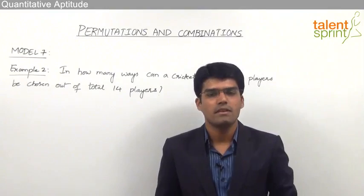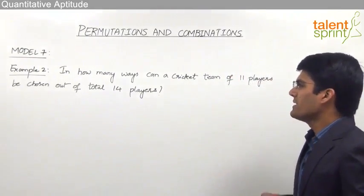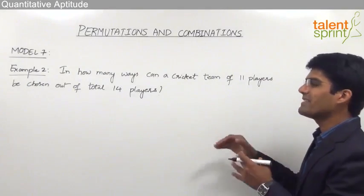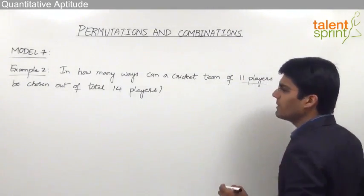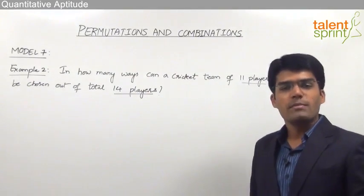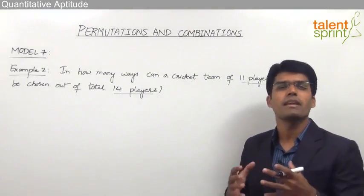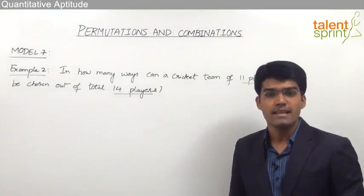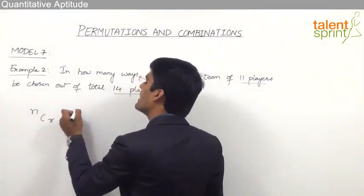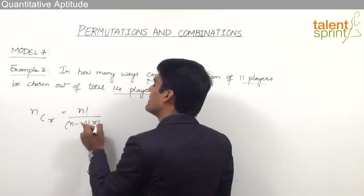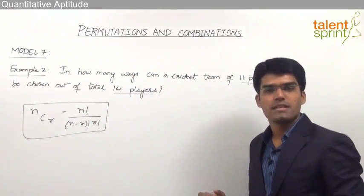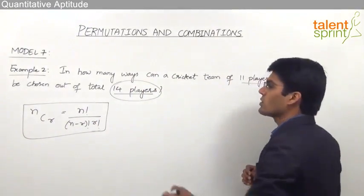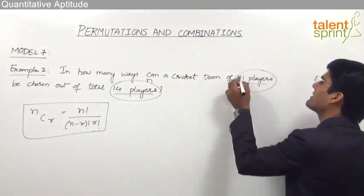Let us now take the second example from model 7. The question is: in how many ways can a cricket team of 11 players be chosen out of a total of 14 players? Since we are forming a team, this is a selection problem and should be taken as a combination. The number of combinations of n objects taken r at a time is nCr = n factorial by (n minus r) factorial into r factorial. Here, total players n = 14, and we form a team of r = 11 players.